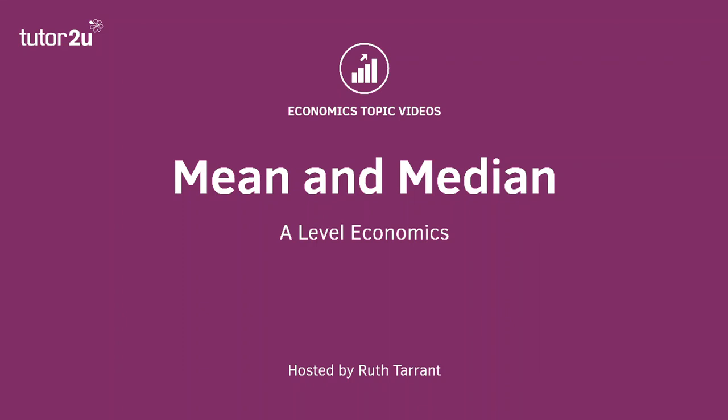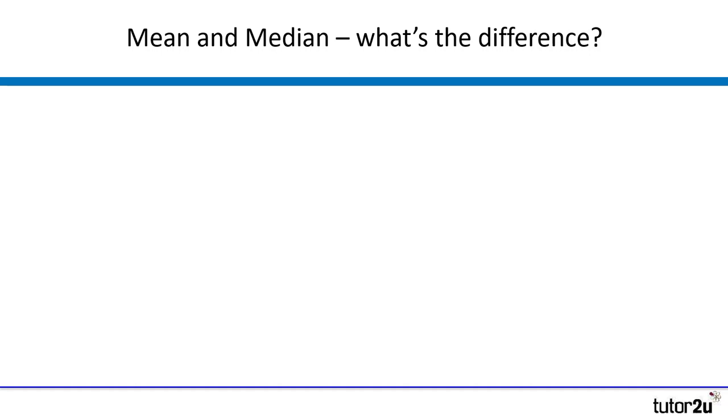Hi there, welcome to this economics revision video on quantitative skills, looking at how to calculate averages — in particular the mean and the median, which are the two averages required in the A-level exam syllabus. If you want to get a better grip on which quantitative skills you need to use in your economics exams, just take a look at your syllabus — in the appendix at the back you have a very comprehensive list of all the things you need to be able to do.